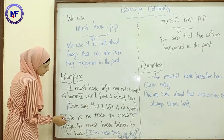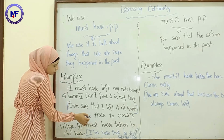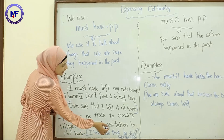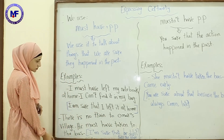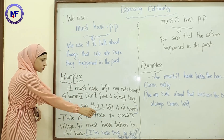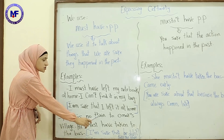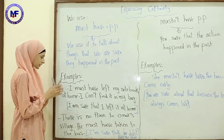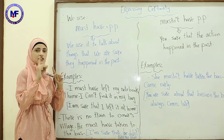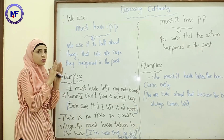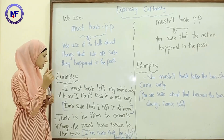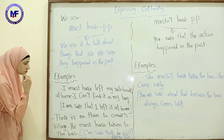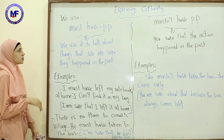Another example: There is no train to Omar's village, so he must have taken the bus. I'm sure because there are no other ways to travel — he can only ride the bus, so we are sure about that.